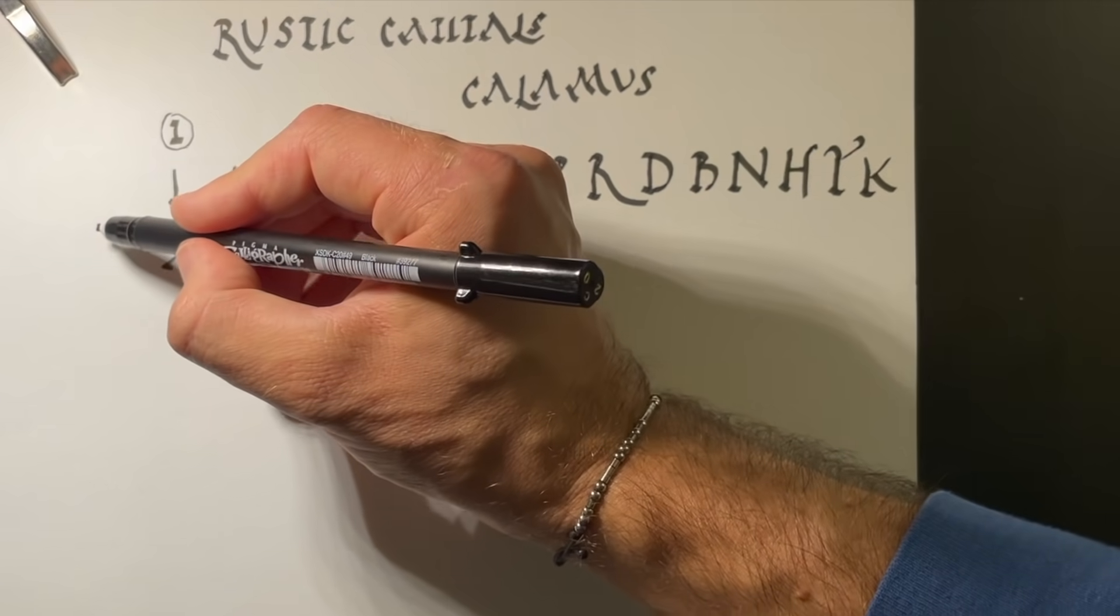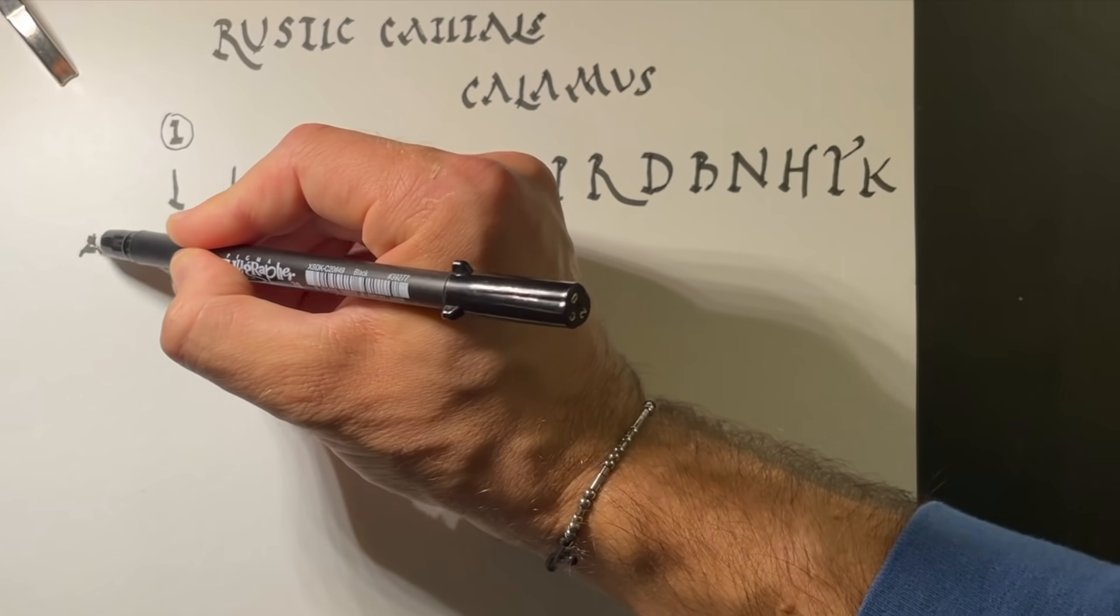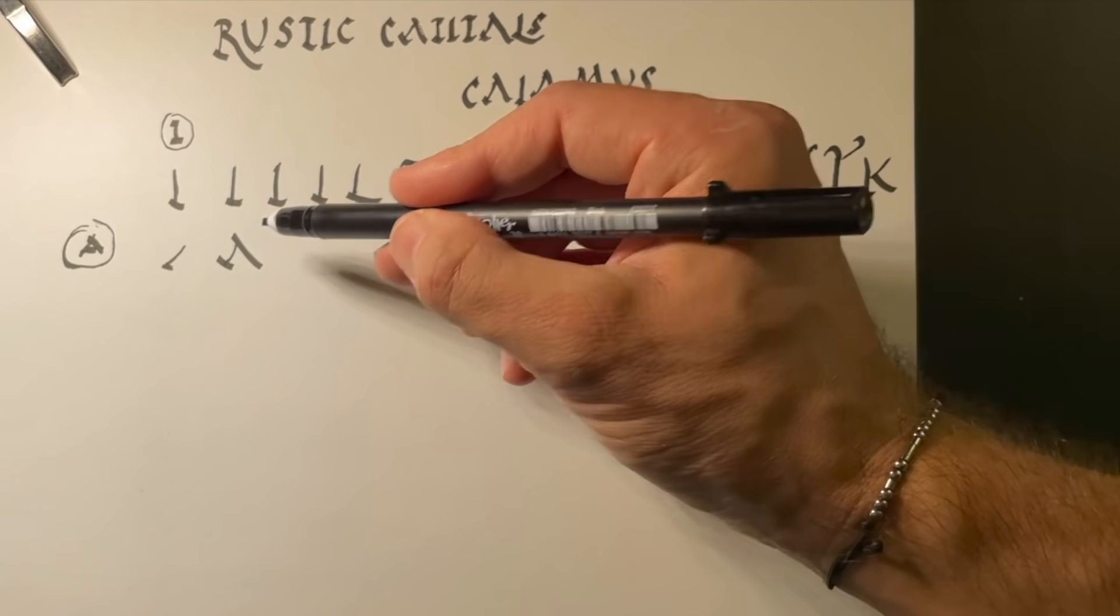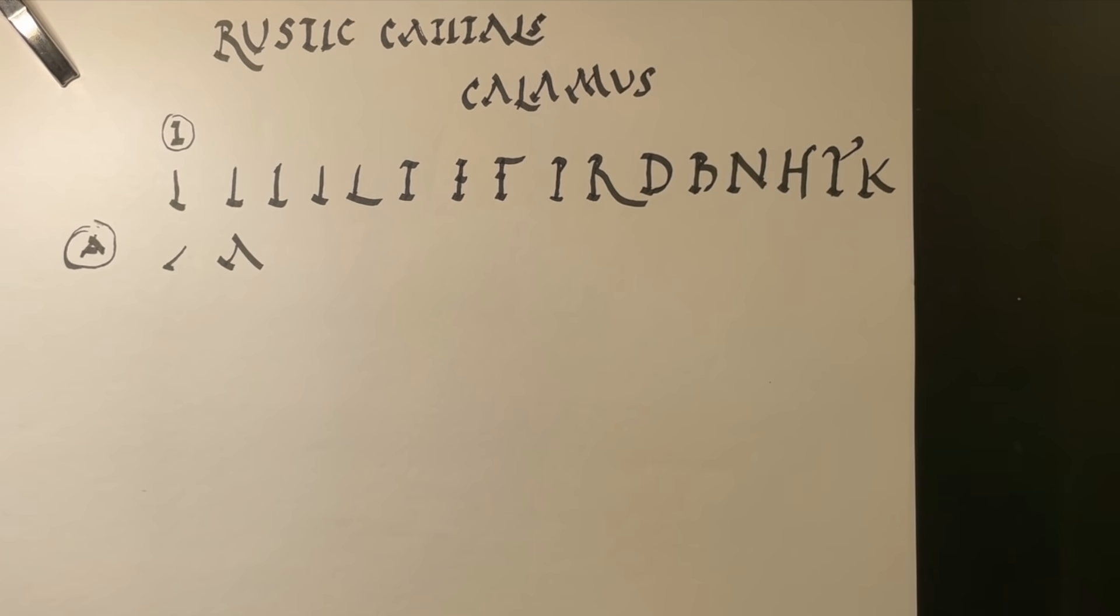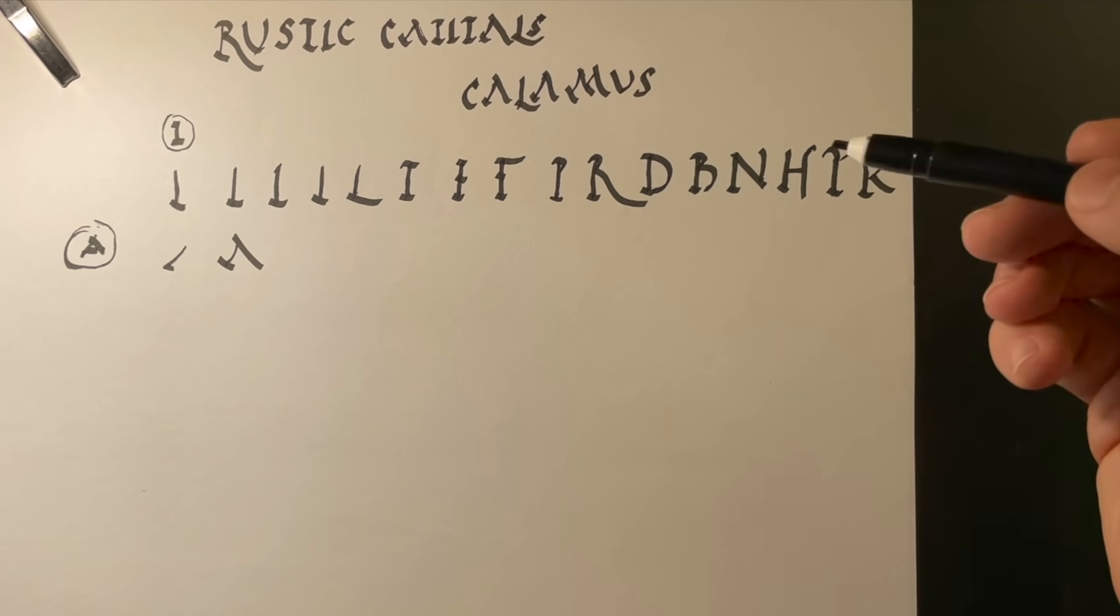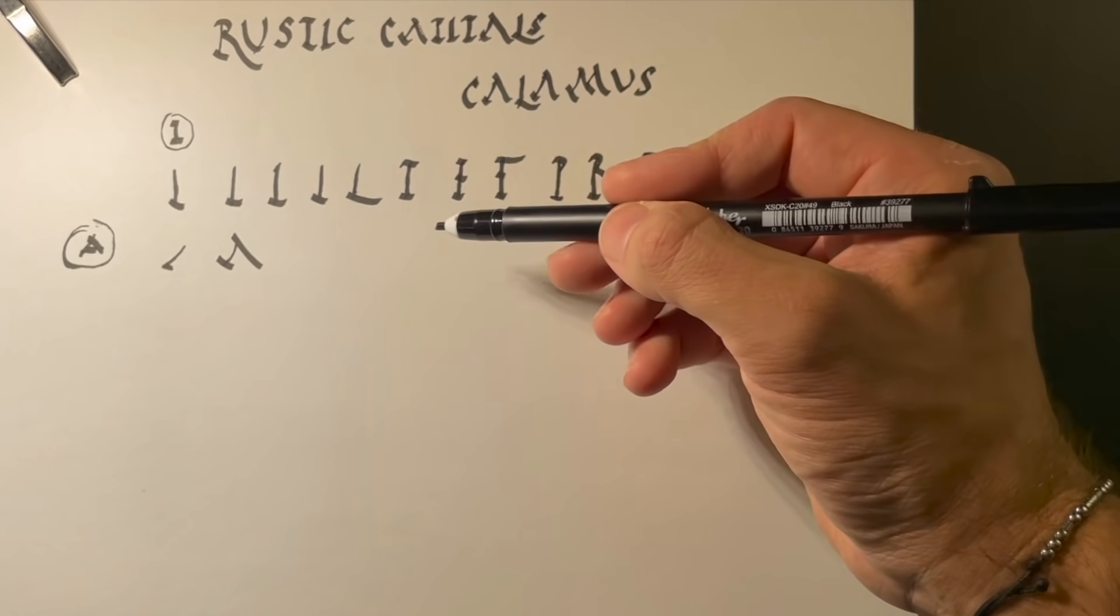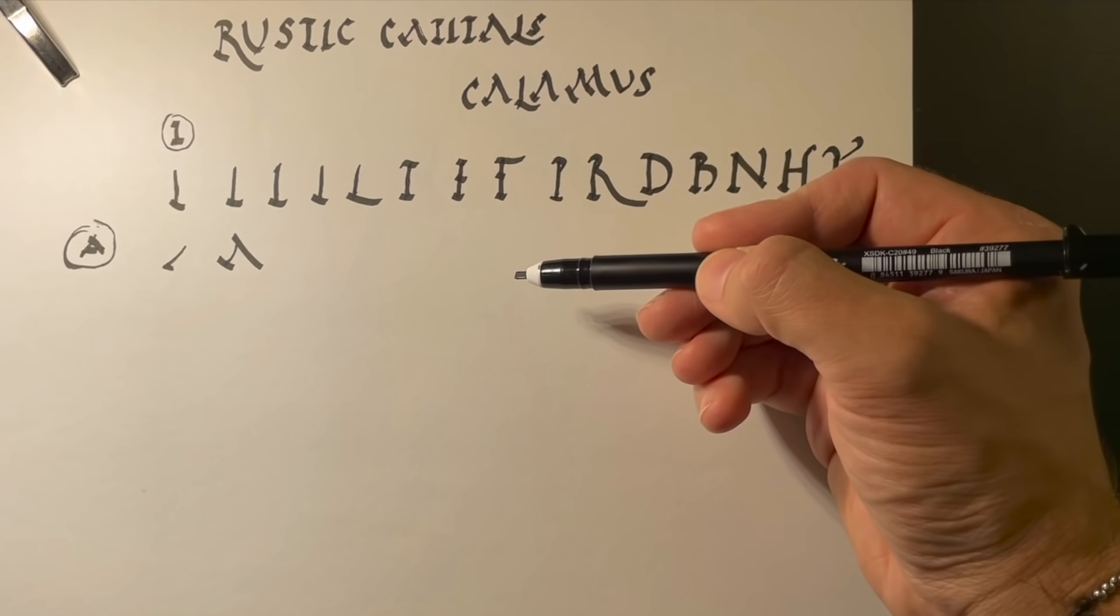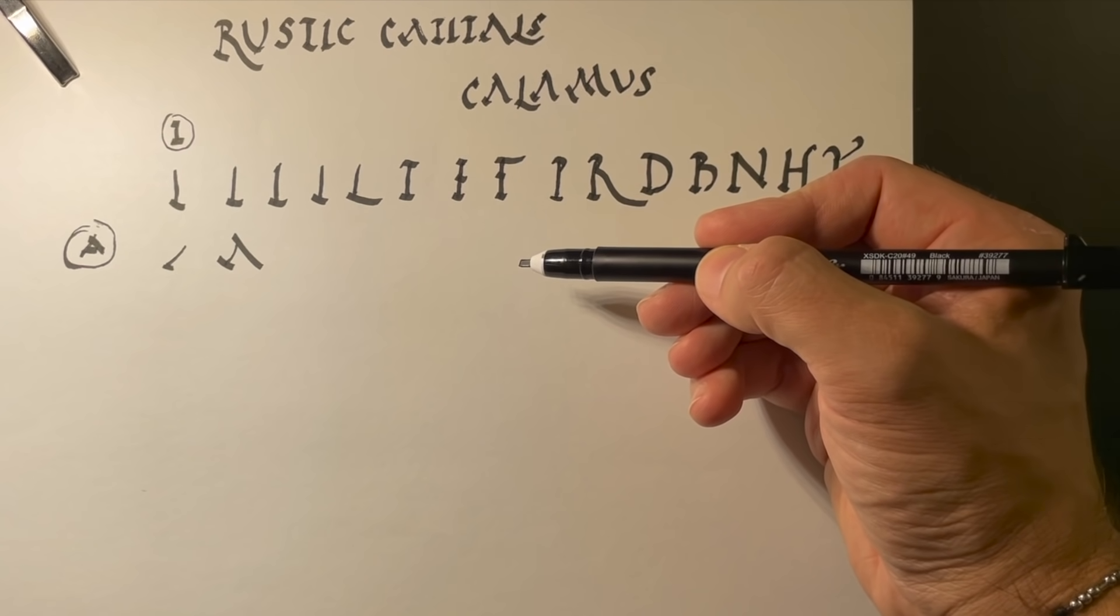Now, while we are used to a letter A having that horizontal part, the rustic capitals essentially never have that horizontal part. So it also looks like a little bit like the Greek letter lambda, which is a lot of fun. There's no lambda, obviously, in Latin, so there's no confusion at all. So it's just a way of saving time, which is pretty great.